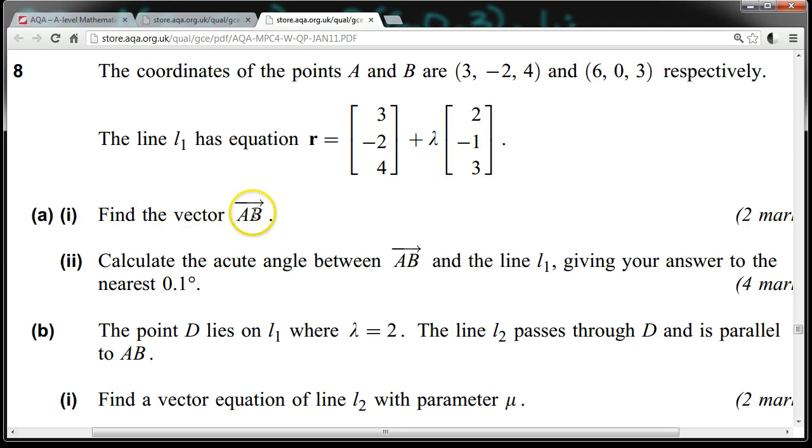Find the vector AB. Calculate the acute angle between the vector AB and the line L1, giving your answer to the nearest 0.1 degree.